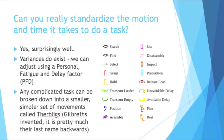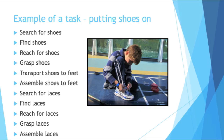As mentioned with the Gilbreths and their therbligs, any complicated task can be broken down into a smaller, simpler set of movements called therbligs. There is an image on this slide that has an example of some of them. Here is a real life example of how we could break down an operation into simpler parts — let's say putting shoes on. First you would search for your shoes, then find them, reach for them, grasp them so they're in your hands, transport your shoes to your feet, assemble shoes to feet — meaning put the shoe on your feet — then search for the laces, find the laces, reach for them, grasp them, and assemble them.